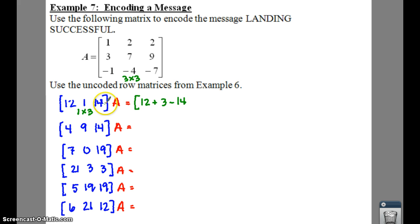So we're going to do 12, 1, 14 times 2, 7, negative 4. So 12 times 2 is 24. 1 times 7 is 7, so you're going to add 7. And we're going to take 14 times a negative 4 gives us negative 56.